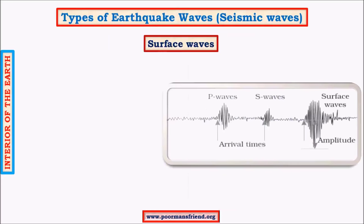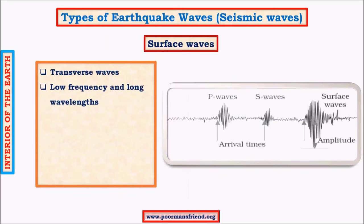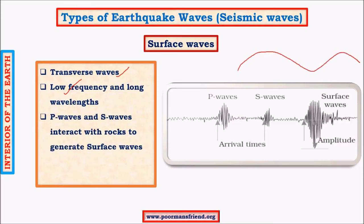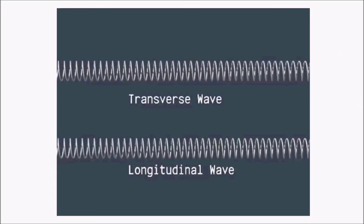Surface waves are localized waves produced due to interaction of primary and secondary waves with rocks at the surface. They are transverse in nature, like secondary waves, but are low-frequency, long-wavelength waves — their very long wavelength can create huge disturbances on the earth's surface — and they have greater amplitude. Surface waves are present only in a small region around the epicenter and are not seen at longer distances, but they are the most destructive of all earthquake waves.